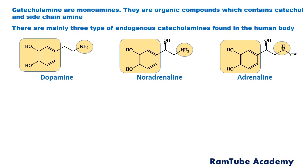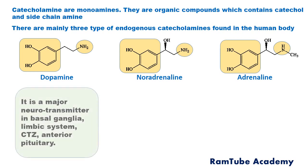All of them play an important role in various brain functions and in the adrenergic system. The first one is dopamine, which is synthesized and released in the brain. It is a major neurotransmitter in the basal ganglia, limbic system, CTZ, and anterior pituitary.